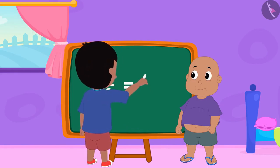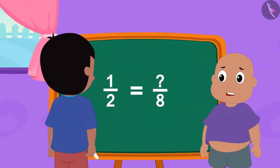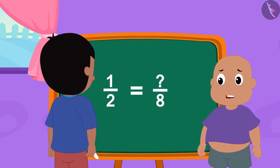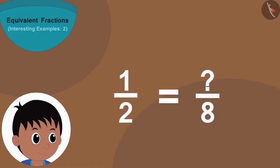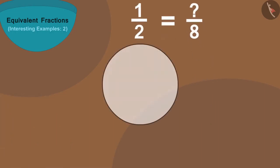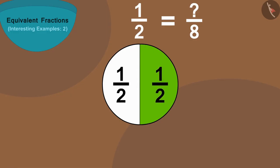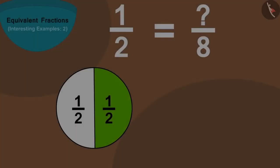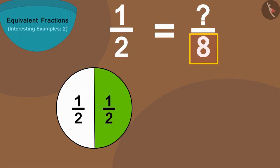Raju first wrote this fraction. Bablu started finding the fraction — children, can you help Bablu? Raju wrote this fraction here. The number two shows how many parts of a thing are created, and the number one shows that we took one of those two parts. Like if we divide this circle into two equal parts and fill color in one part, then we can write the colored part of the circle as a fraction — one by two.